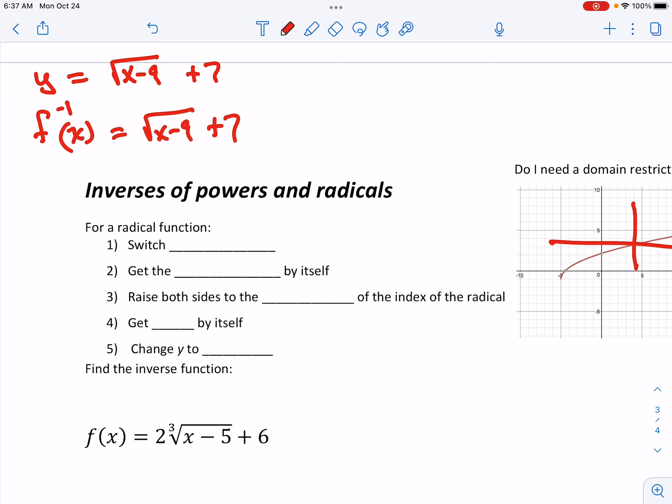So we're still going to switch the x and the y. We're going to get the radical by itself. We're going to raise both sides to the power of the index. The index is this number above the root. That will be the power.